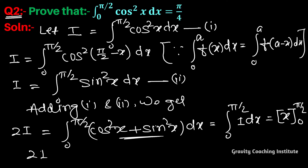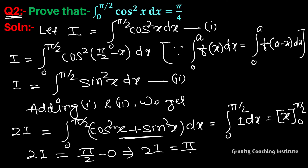So 2I equals π/2 minus 0, therefore 2I equals π/2, and so I equals π/4.